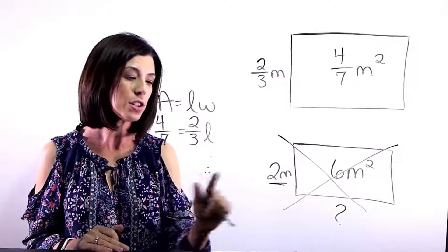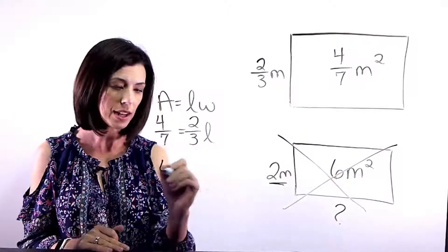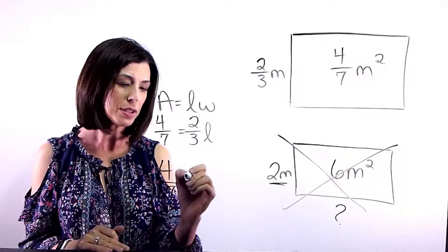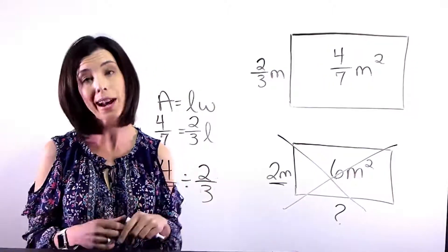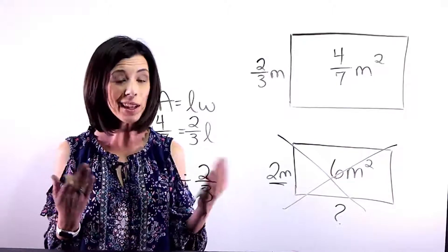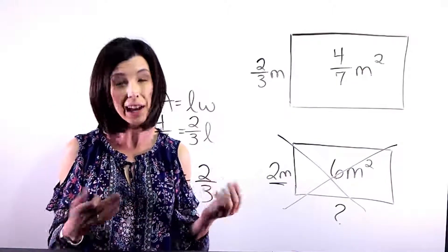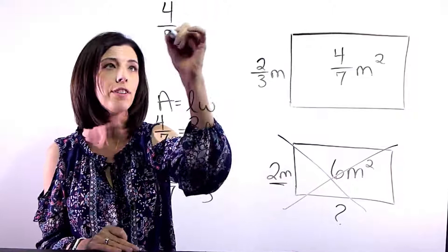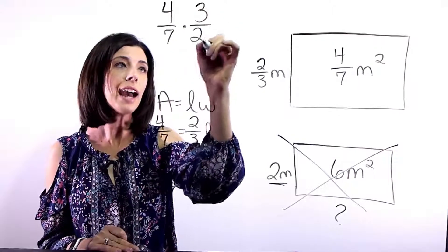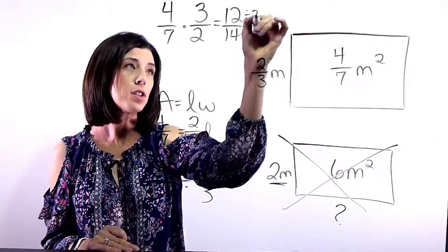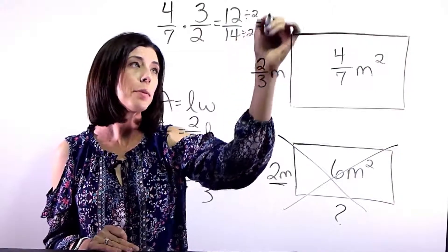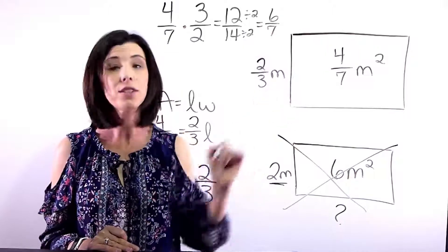So now what I need to do is I need to divide this. So I'm going to take four sevenths, and I'm going to divide by two thirds. Now there's two different ways that you can actually divide fractions. One way is to multiply by the reciprocal. A lot of people are used to that. I'll show you that way first. So we can multiply times three halves. I get twelve fourteenths. Then I can divide by two, divide by two, and I'm going to get six sevenths for the length.